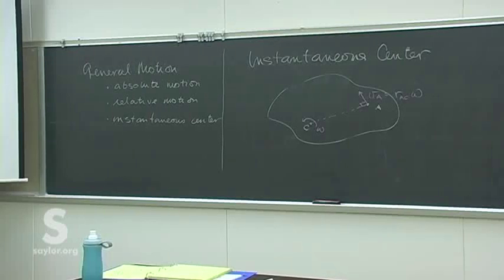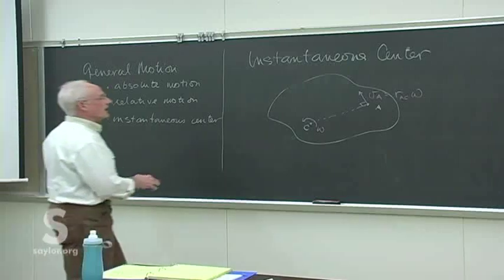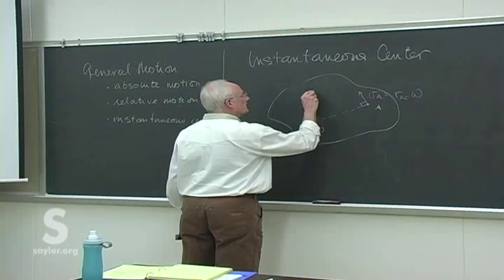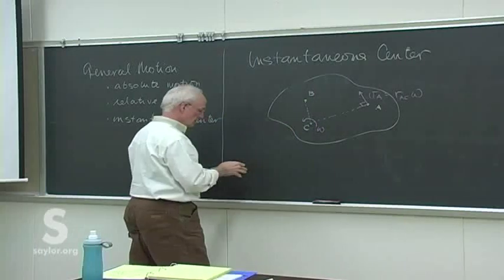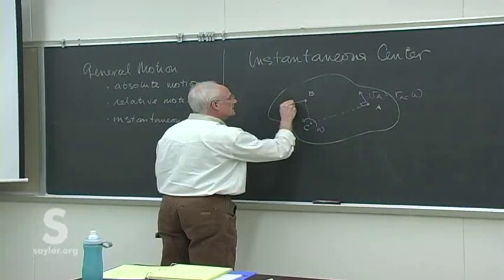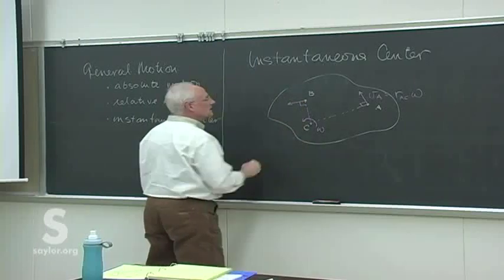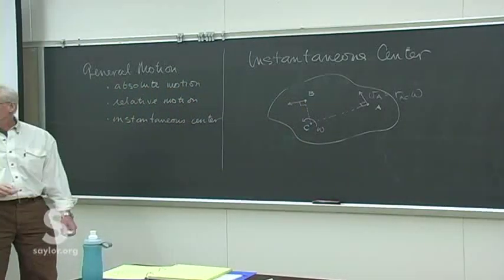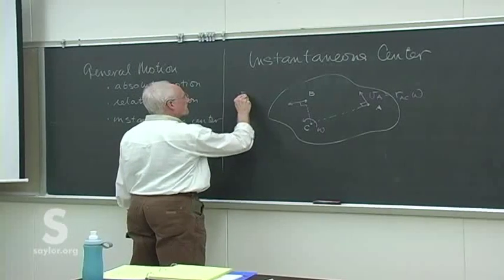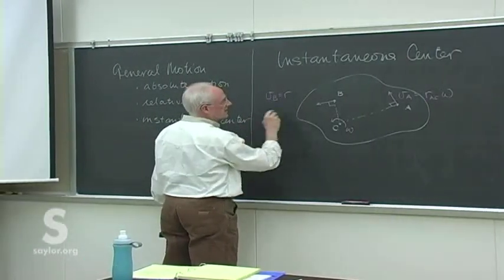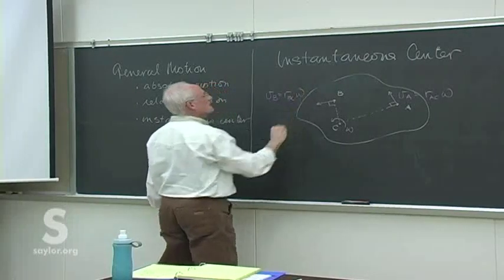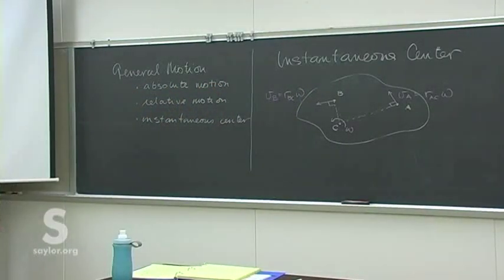That's true for any other point on the object as well — perhaps point B. We connect the two, draw the velocity vector perpendicular, and then calculate the magnitude as the product of R omega. So this is R_B times omega, and we could do that for any possible points on that rigid body.